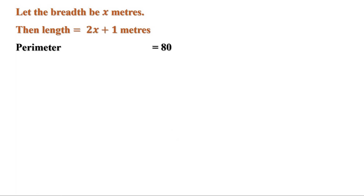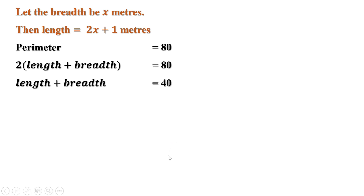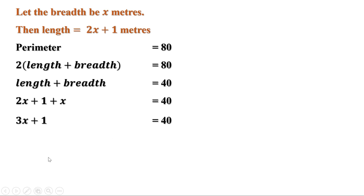Given that perimeter is 80 meters, and perimeter = 2 × (length + breadth). So 2(length + breadth) = 80, which means length + breadth = 40. Substituting: (2x + 1) + x = 40, so 3x + 1 = 40. Therefore 3x = 39, and x = 39 ÷ 3 = 13.